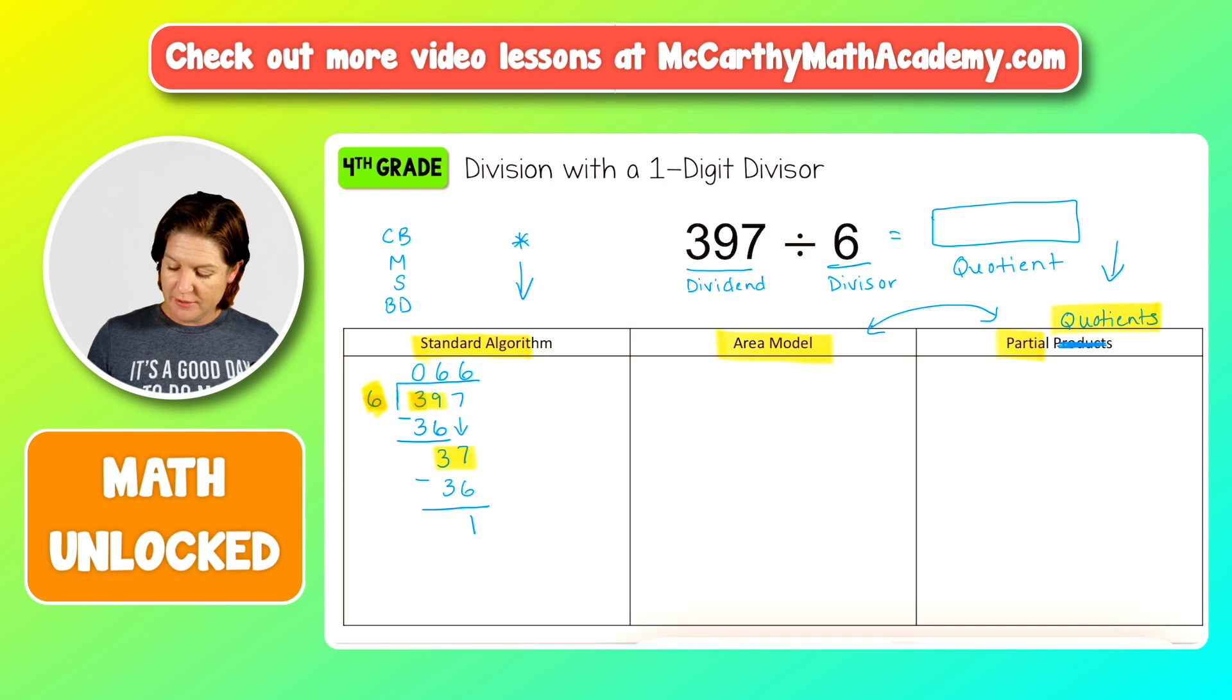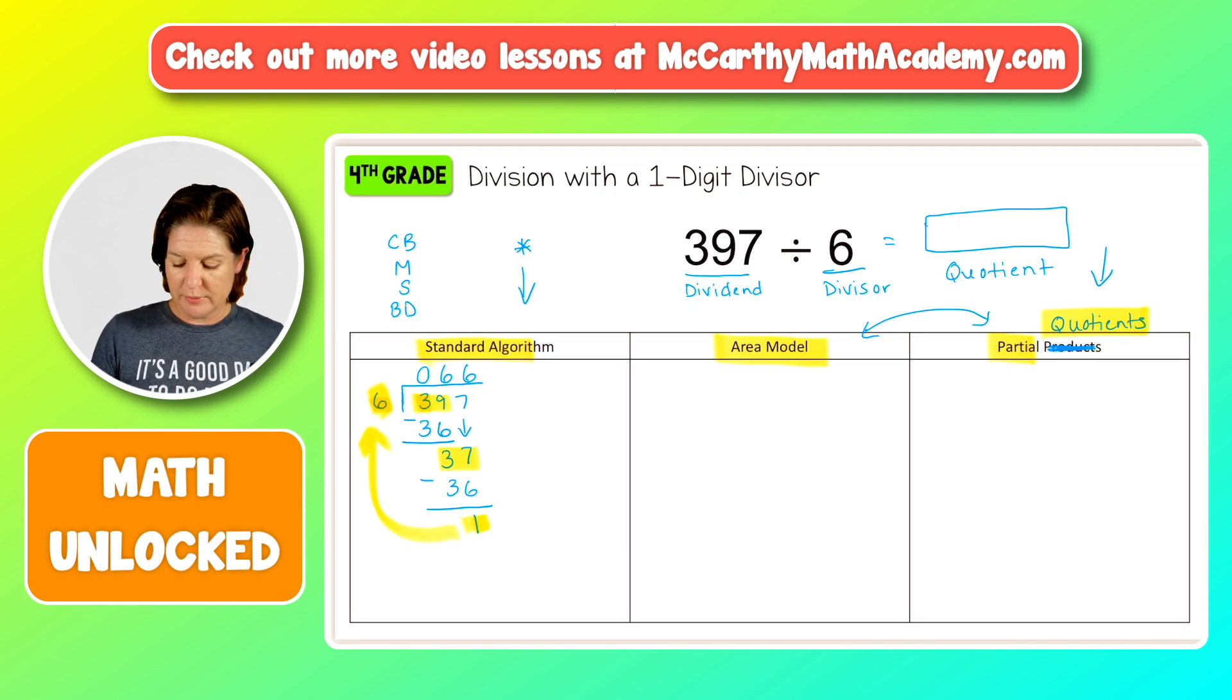And look right here. This one is smaller than our six, which means that we are, that means that we're finished. That's our remainder. Okay. So there's two ways that we can write this problem right now that we will focus on. It would be 66 with a remainder of one.